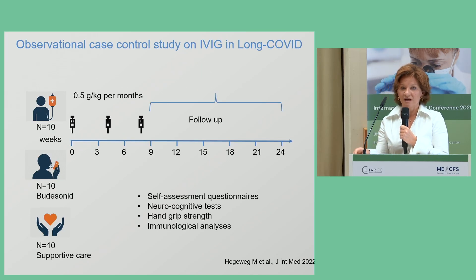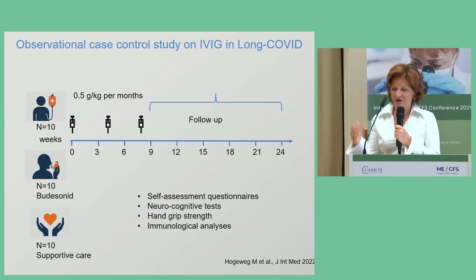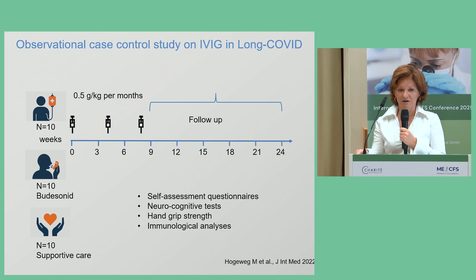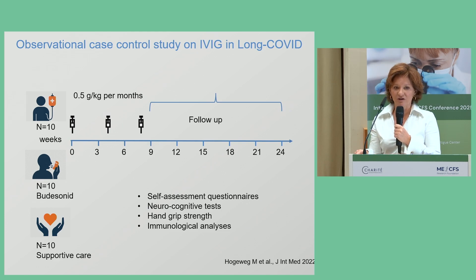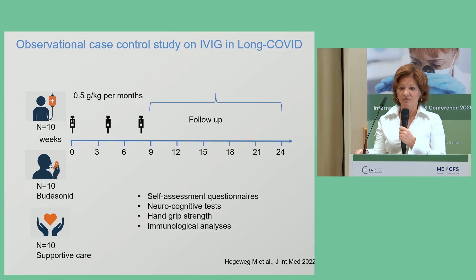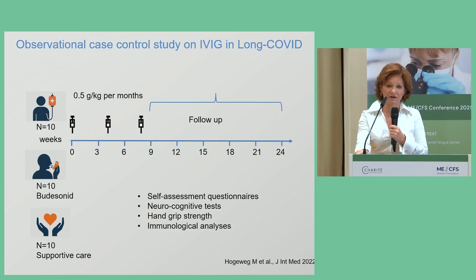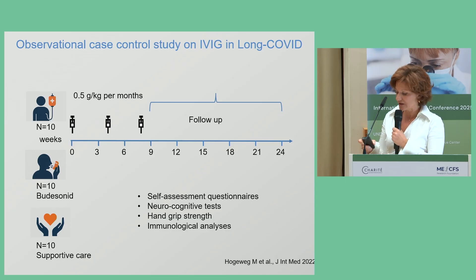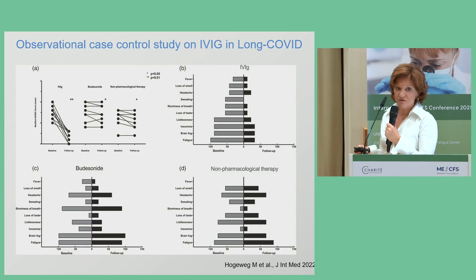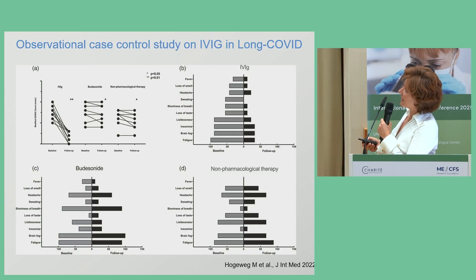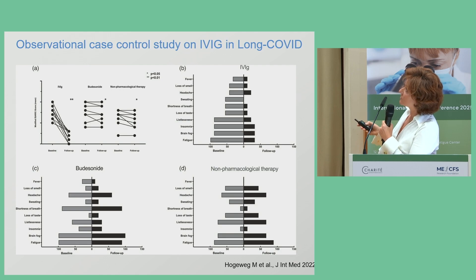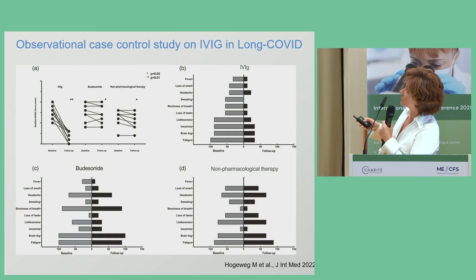Our group performed a study on IVIG in patients after COVID-19. We had three groups of 10 patients each. Patients received three infusions of 0.5 grams per kilogram body weight and were followed up for 24 weeks. We used self-assessment questionnaires, neurocognitive tests, hand-grip tests, and immunological analysis. The ISERC score for fatigue and neurocognitive tests decreased significantly in the IVIG therapy group, while patients under baricitinib and supportive care showed only slight improvement, with a statistically significant difference between groups.